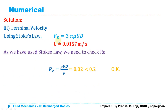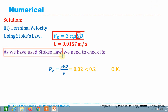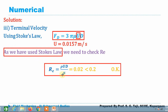For terminal velocity, use Stokes law: FD = 3πμUd. Substituting known values of FD, μ, and d, we solve for U and get U = 0.0157 m/s. To verify, we calculate Re = ρUd/μ. Density of the fluid = 900 kg/m³. Substituting: Re = 0.02, which is less than 0.2, confirming Stokes law is valid and our answer is correct.